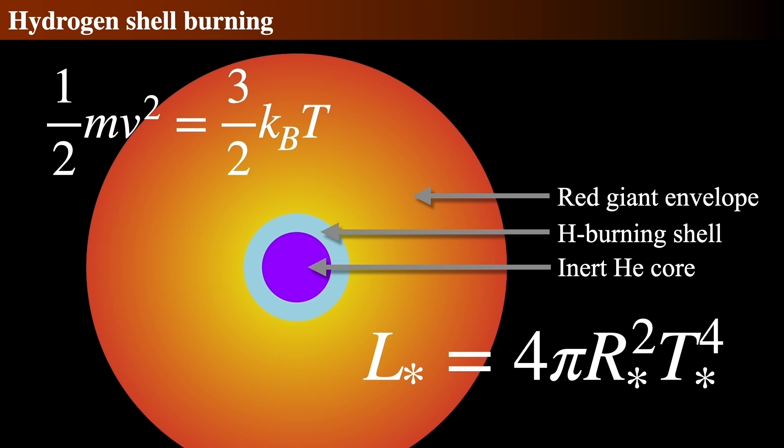So we can equate the average kinetic energy, one-half mV squared, resulting from the faster speeds of the nuclei, to the average thermal kinetic energy, three-halves kBT.